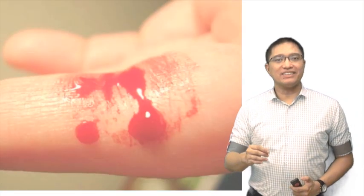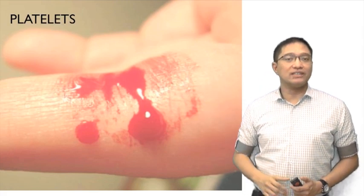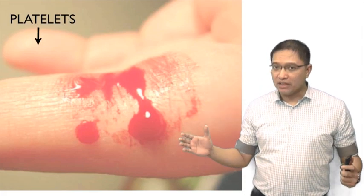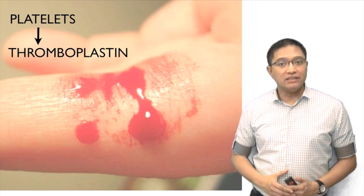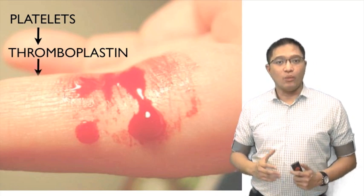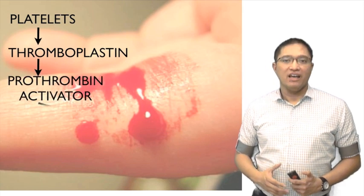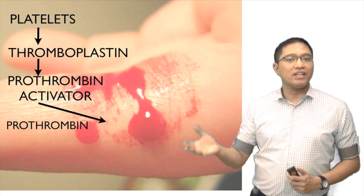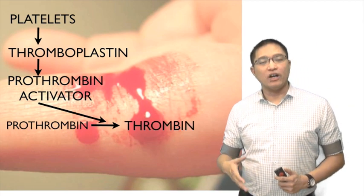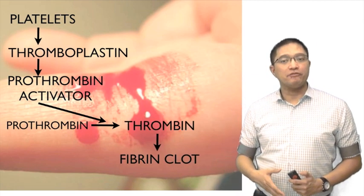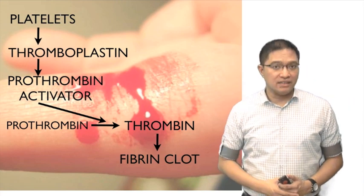When there is a site of injury, the platelets go to the site of injury. Chemicals like thromboplastin are being released, and thromboplastin is the one that will activate the prothrombin. That prothrombin will now become thrombin, and the thrombin will act on the fibrinogen to become a fibrin clot. This is the clotting mechanism.